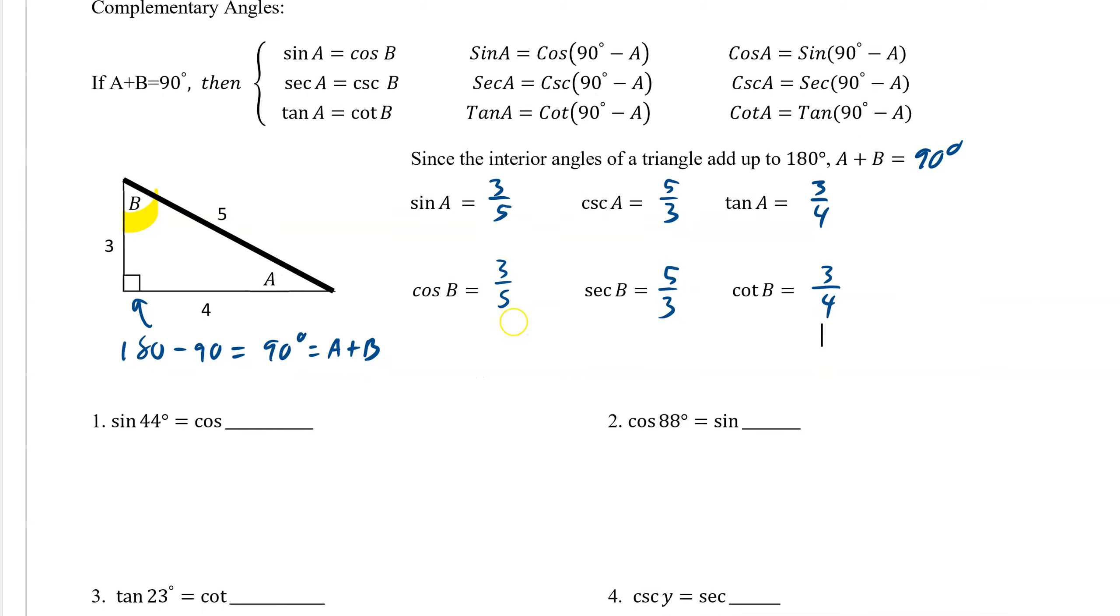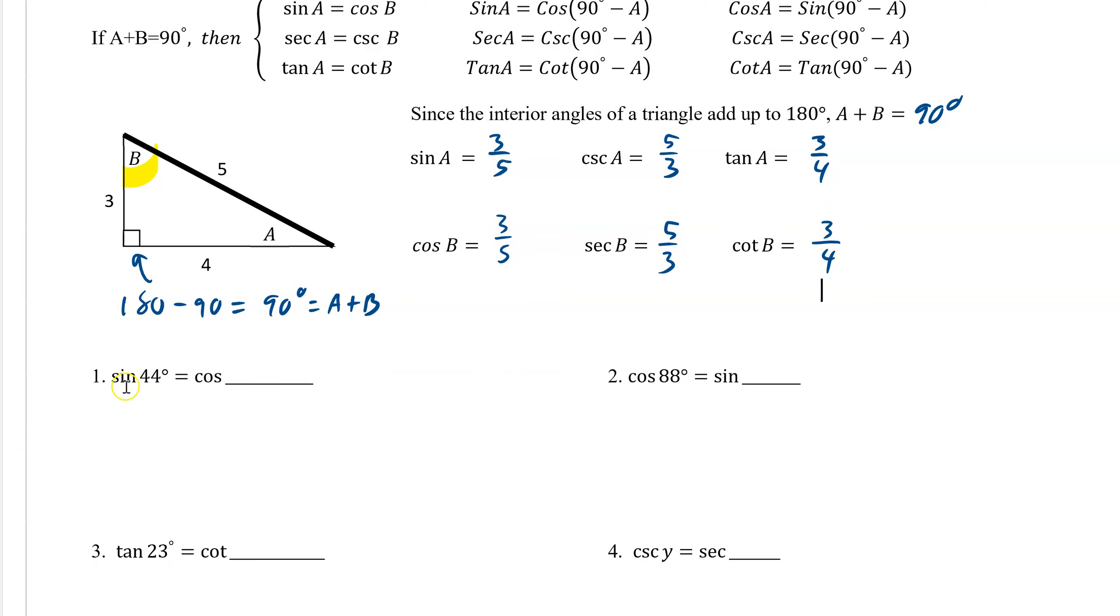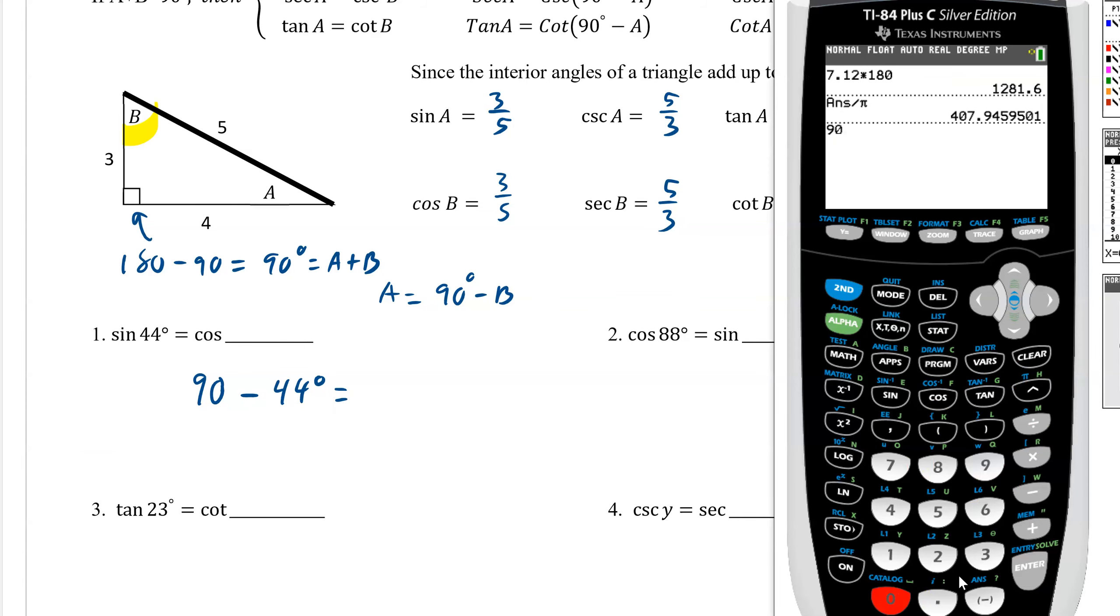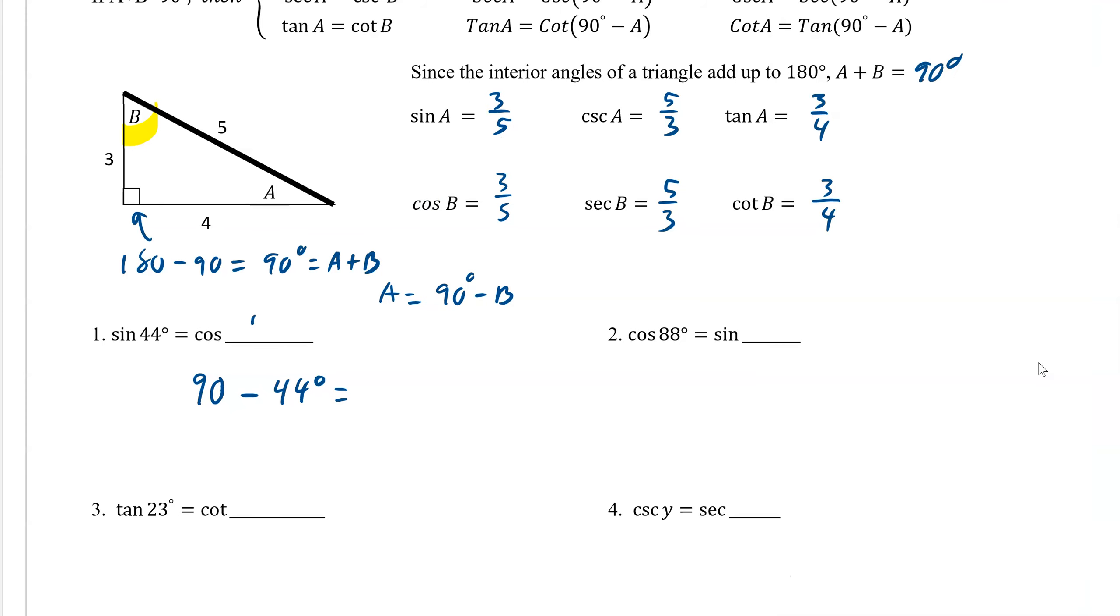We've proved it. So using this idea, we can say that if these two are equal, then that complement, that cofunction for sine would have to be 90 degrees less than 44. Because they both have to add up to 90. So if a plus b equals 90, then a would equal 90 minus b. So if we take 90 and subtract 44, you get 46. So that's it, 46 degrees.